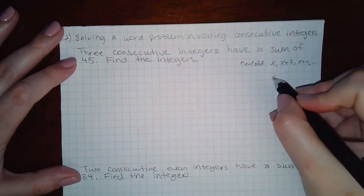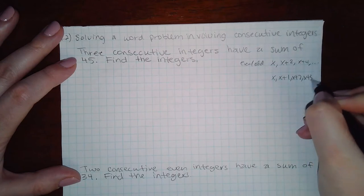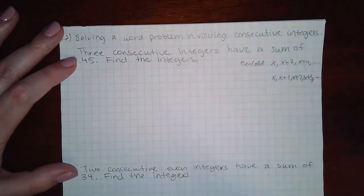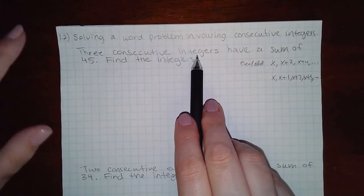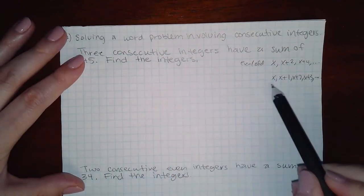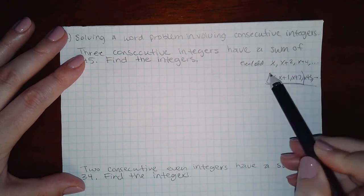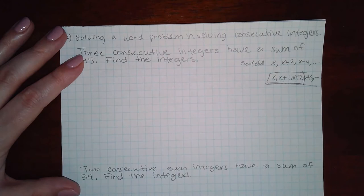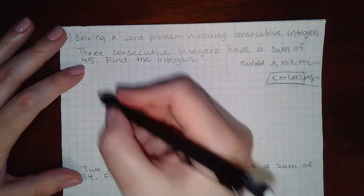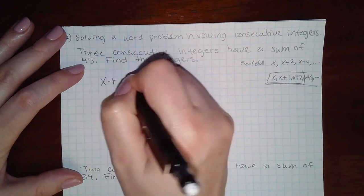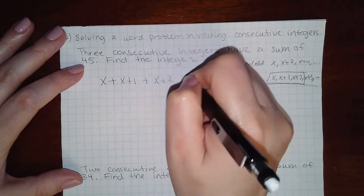Or if it's just regular consecutives it's x, x plus 1, x plus 2, x plus 3 and so forth. So here it says we have three consecutive integers. Now it does not specify even or odd so it's going to be this case and I need to take three of them which means only these three terms. It says they have a sum of 45 which means the first integer plus the second integer plus the third integer should equal 45.